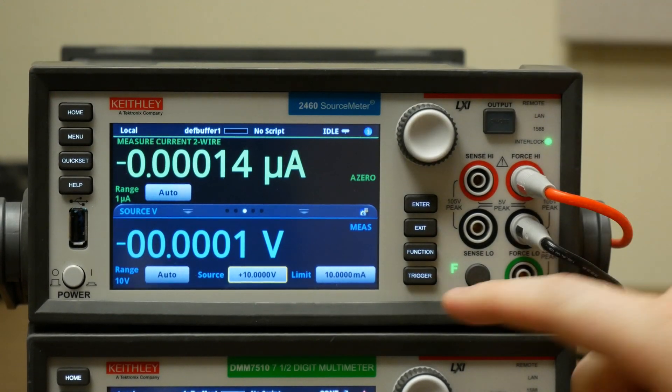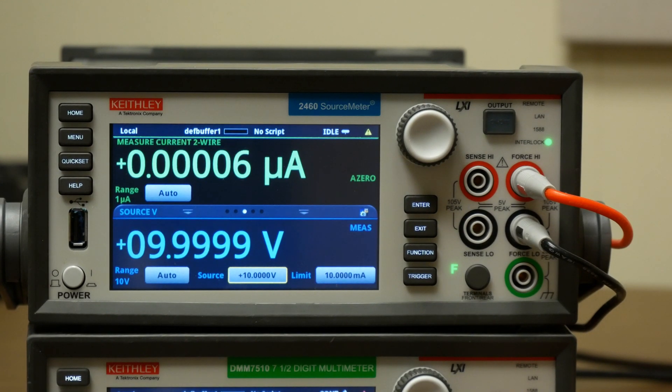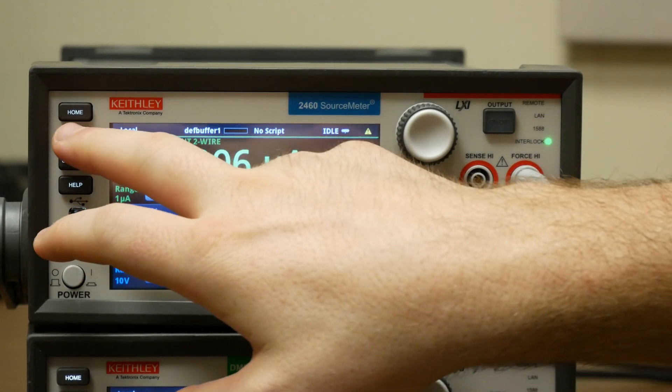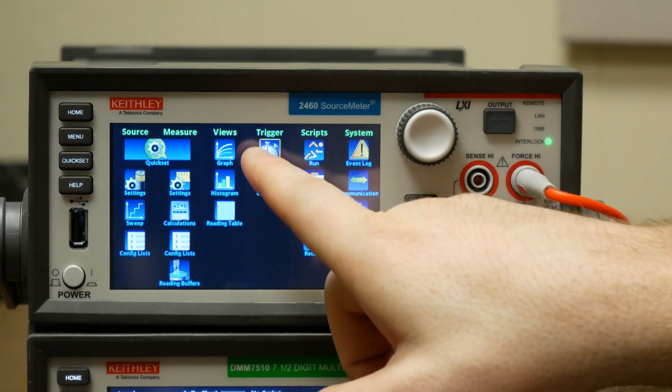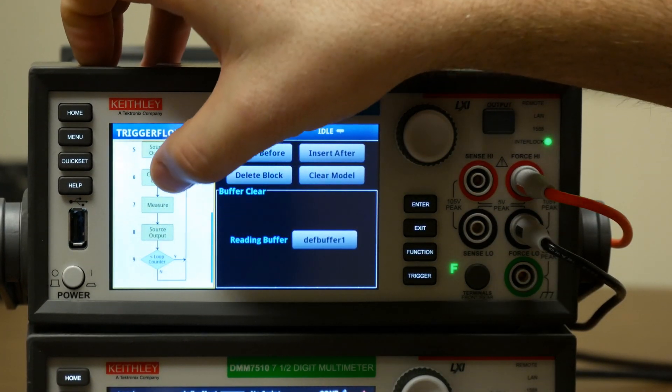So now if we go back and we trigger the instrument, it should go through 5 and 10 volts there. But if we want this to loop, we'll go under trigger, configure, and down at the bottom here,